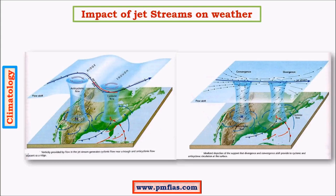In the trough region, there is divergence at the upper levels of the troposphere, which is associated with convergence at the bottom layers. Convergence gives rise to a low pressure system, which gives rise to upliftment of air, which gives rise to clouds. The atmosphere becomes very highly unstable, resulting in a great amount of rainfall. So divergence at the upper layers is associated with anti-cyclonic conditions in the upper layers, whereas we have cyclonic conditions in the bottom layers. This is how ridge and trough influence conditions at the surface.